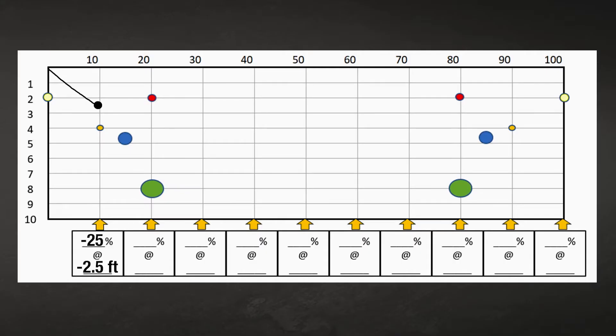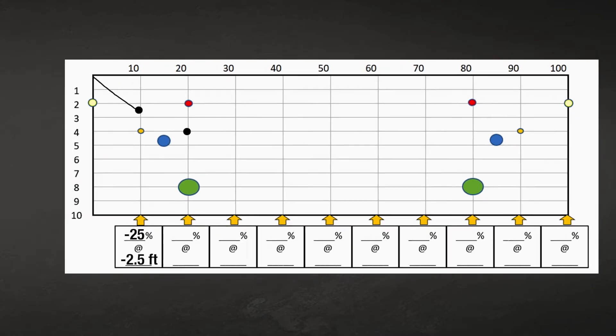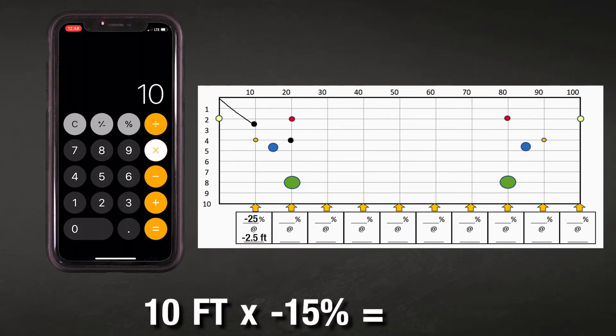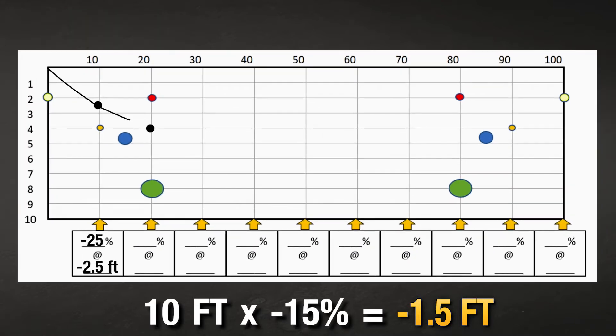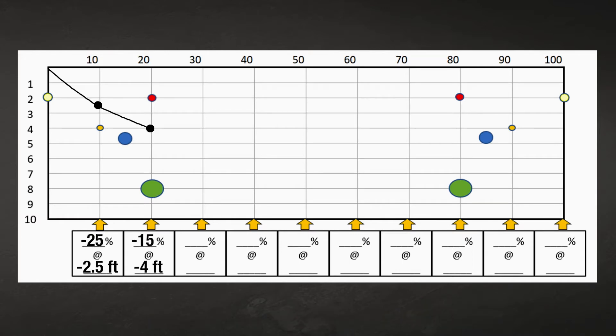For example, to get to four feet deep at the end of the second rod, I need to go one and a half feet deeper. If I multiply the 10 foot rod by negative 15%, it equals negative one and a half feet. Now I know I need to change to a negative 15% to be at four feet deep. After I draw that rod on my graph paper, I then write my current depth and pitch.